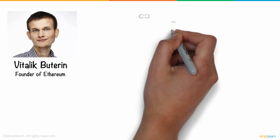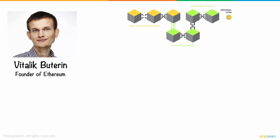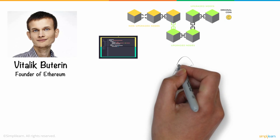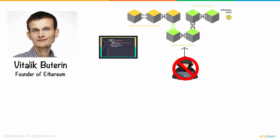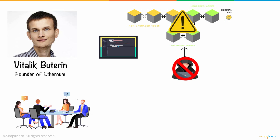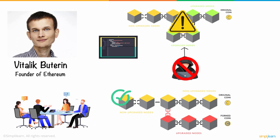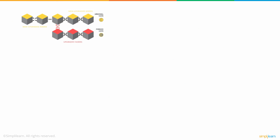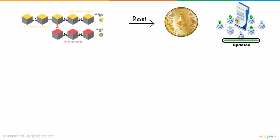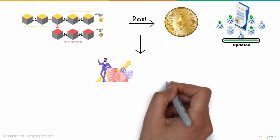Initially, Vitalik Buterin, the founder of Ethereum, advocated a soft fork of the Ethereum network, which included a piece of code that would effectively blacklist the attacker and prohibit them from moving the stolen cash. But soon after, a problem was detected in its code, putting it vulnerable to assault. After great debate, a second alternative — a hard fork — was suggested and subsequently implemented. The hard fork effectively reset the Ethereum network's history and moved the DAO's Ether to a different smart contract, allowing investors to withdraw their assets.